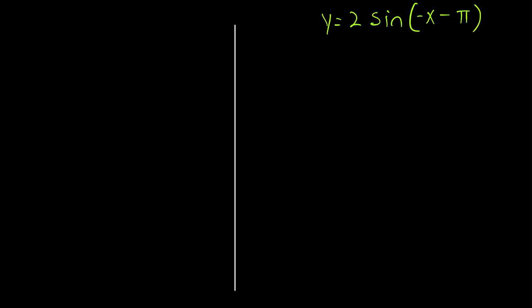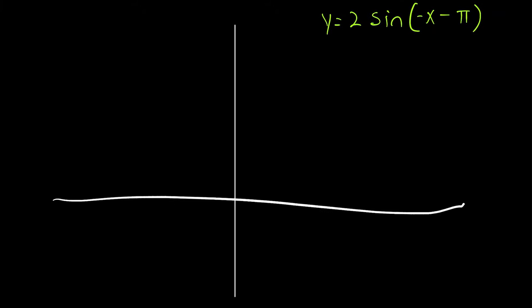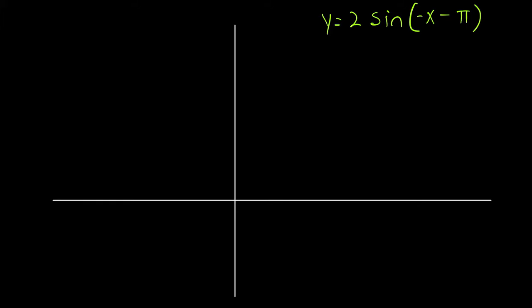We're starting off with a graph of a sine function. First thing to do is find our midline. We see there's no addition or subtraction of any number at the end of our function, so our midline is y equals zero. Now for the amplitude, we might say it's two in front of the sine function. But there is a hidden step here: the coefficient of x is negative, and we don't really like that.